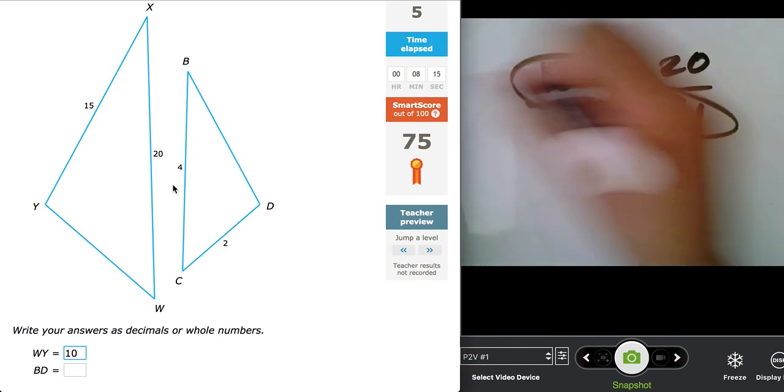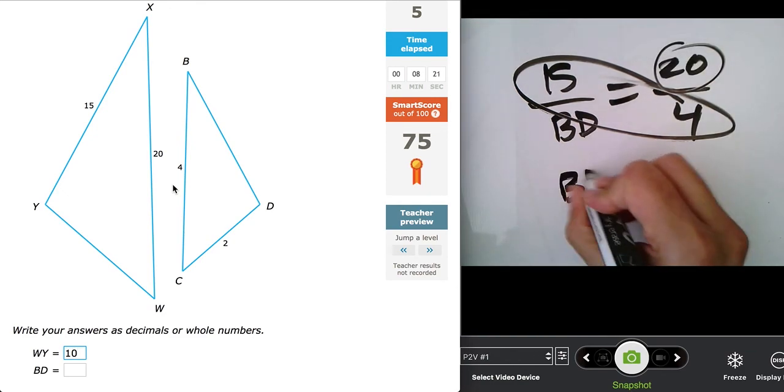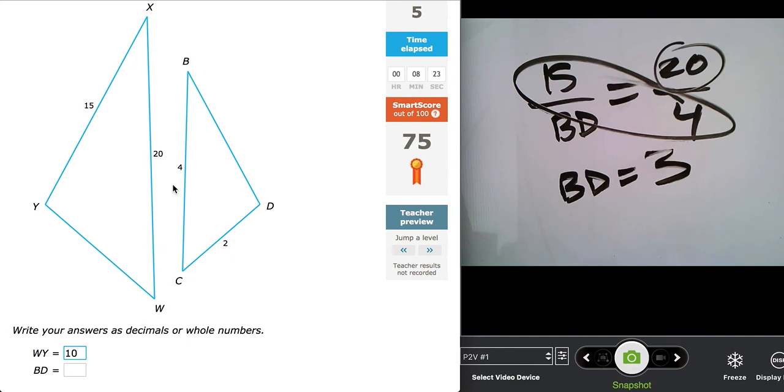So we're going to cross multiply here. 15 times four, 60. Divided by 20, that is three. Therefore, BD has a measure of three.